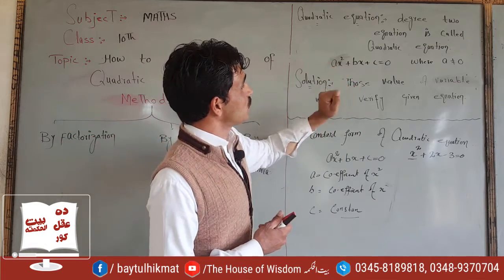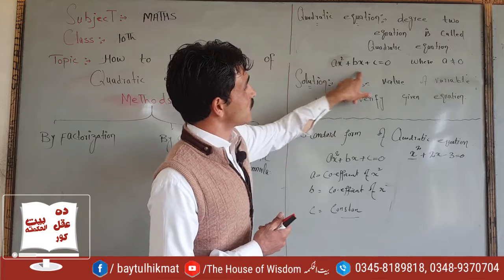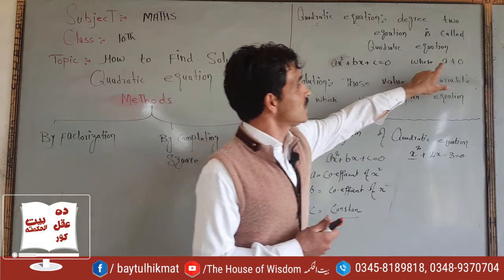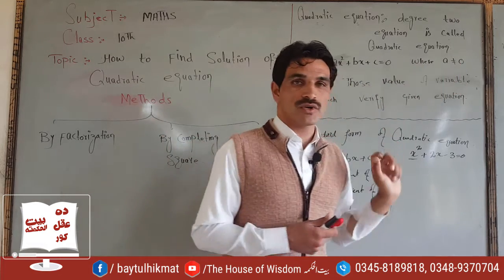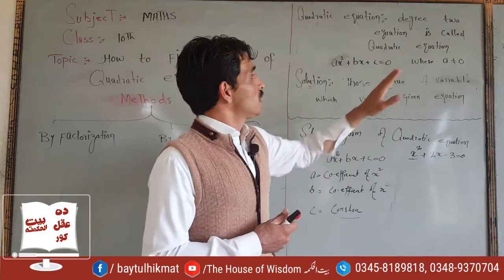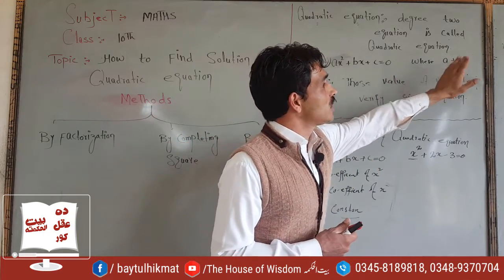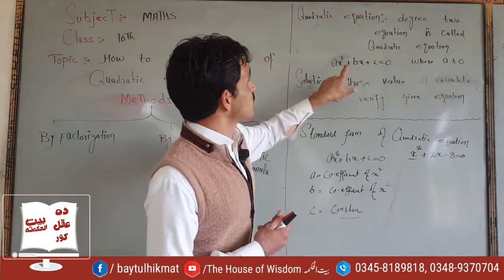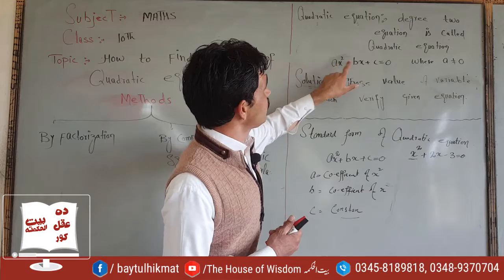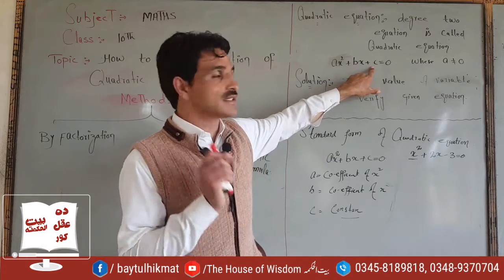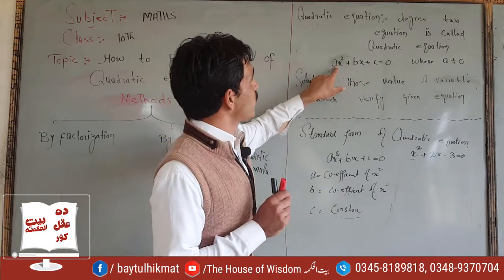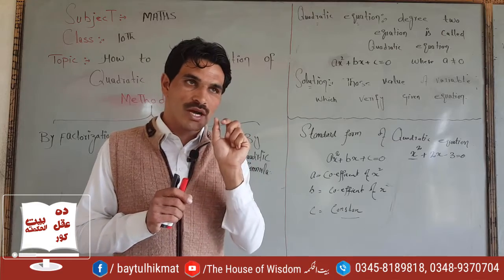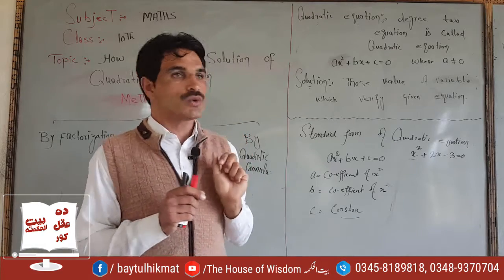The standard form of a quadratic equation uses constant variables. If a is not equal to zero, then a, b, and c are real numbers, and x is the variable.